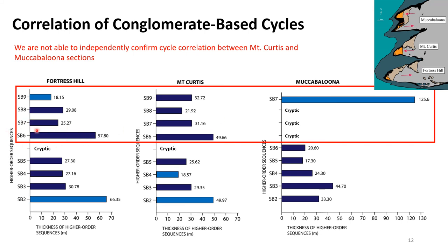At the sequence boundary six level in Fortress Hill and Mount Curtis, the sequence doubles in thickness, whereas at Makabaluna we do not see the same doubling. Using this, we argue there may be a potentially cryptic sequence boundary within Mount Curtis and Fortress Hill that is displayed at Makabaluna. Furthermore, at Makabaluna the distance between sequence boundaries six and seven increases dramatically; dividing by the standard ~30-meter periodicity observed at Fortress Hill and Mount Curtis, there is the possibility that three cryptic sequence boundaries exist within this interval that have transitioned from the observable sequence boundaries in Mount Curtis and Fortress Hill.